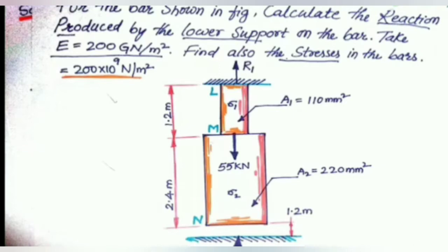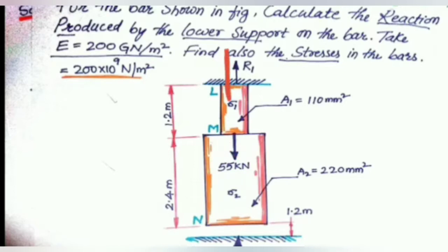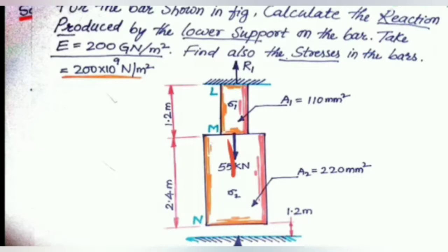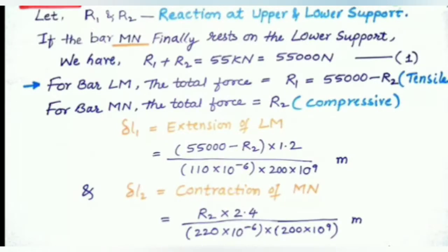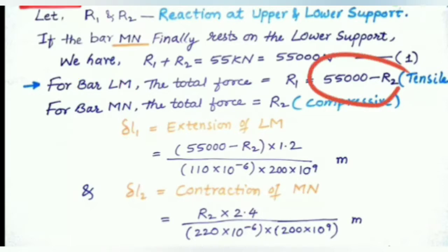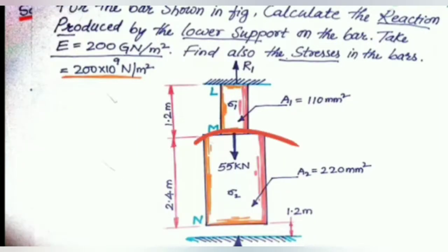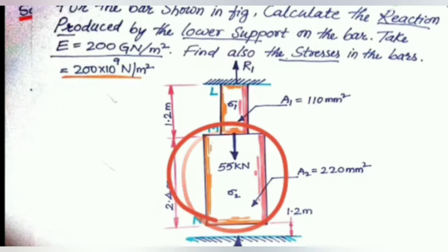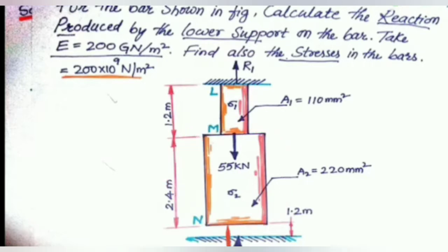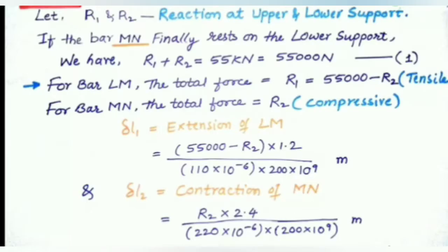What is the force at element one? R1 is acting in tension and 55 kN is the applied load, so the force at element one is 55 minus R2 — because tension is positive and compression is negative. So 55 minus R2 is the tensile force at element one, meaning R1 equals 55 minus R2. Similarly, for element two, the only force acting is R2 in compression.